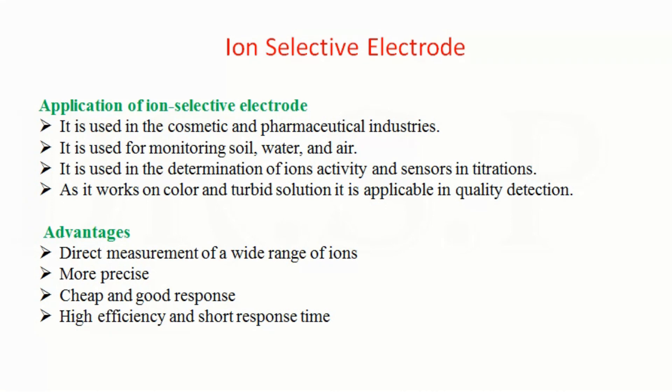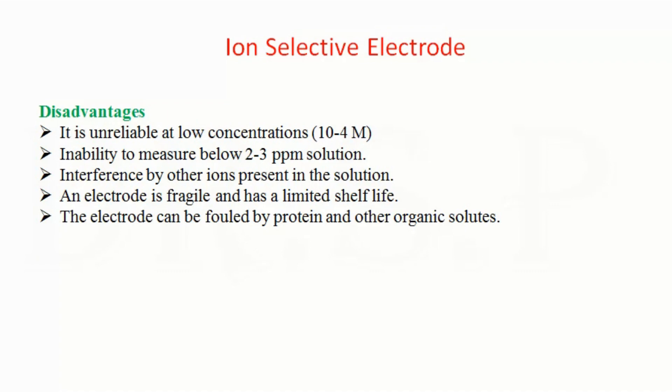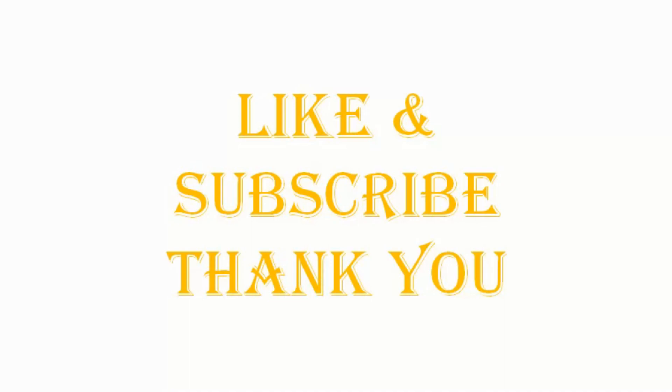Disadvantages of Ion Selective Electrode are: It is unreliable at low concentrations, inability to measure below 2 to 3 parts per million solution, interference by other ions present in the solution, an electrode is fragile and has a limited shelf life, the electrode can be fouled by protein and other organic solutes.